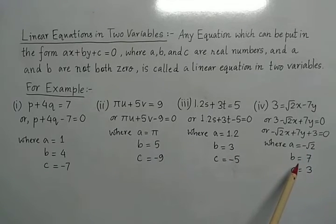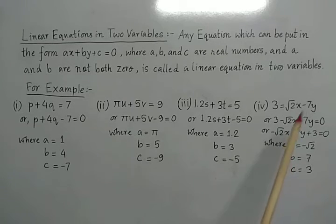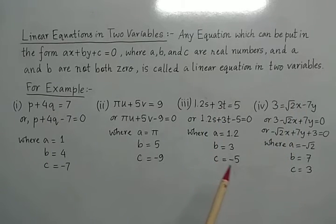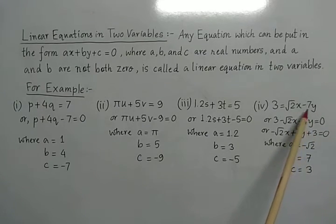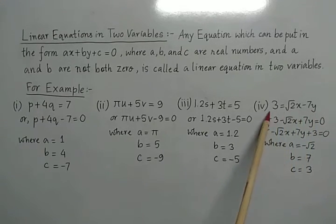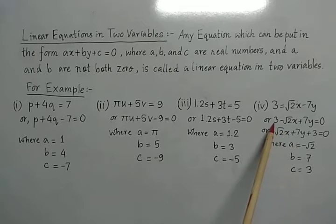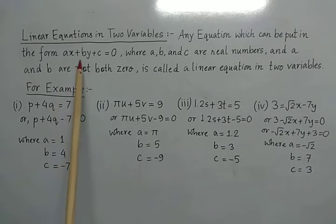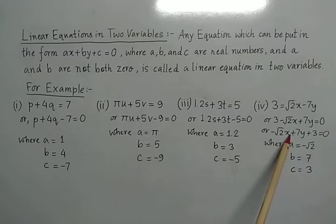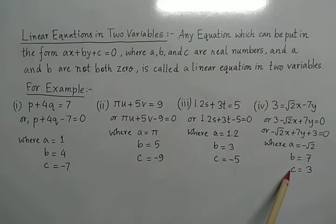In the next example, the same process applies — comparing with the general form to get a, b, and c. But here the arrangement is the opposite: generally we see the x and y terms on the left hand side and the constant on the right, but here it is reversed. We bring the whole expression onto the left hand side by transposing and changing signs, then reshuffle into ax plus by plus c form. Comparing gives a equals to minus root 2, b equals to 7, and c equals to 3.